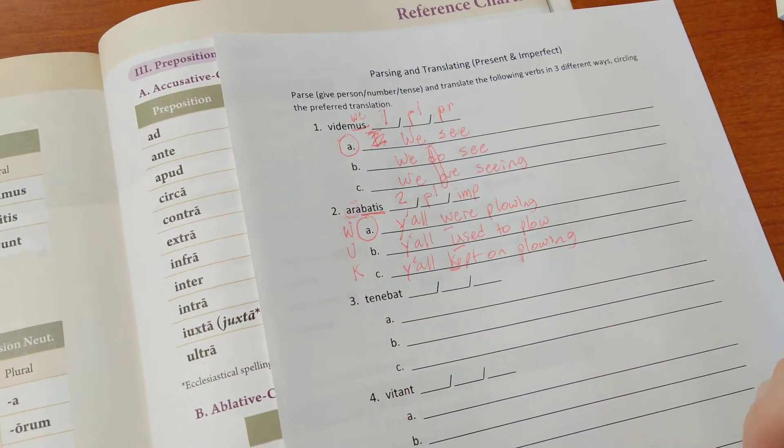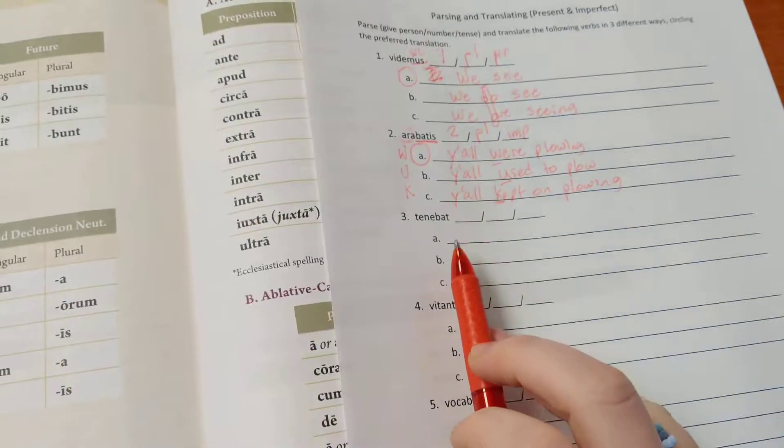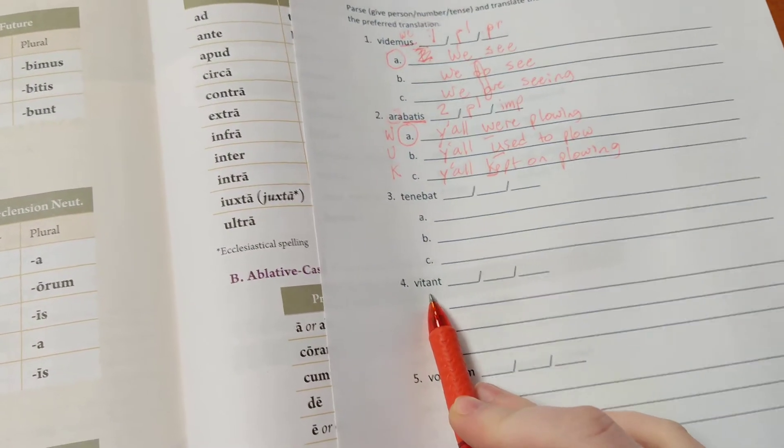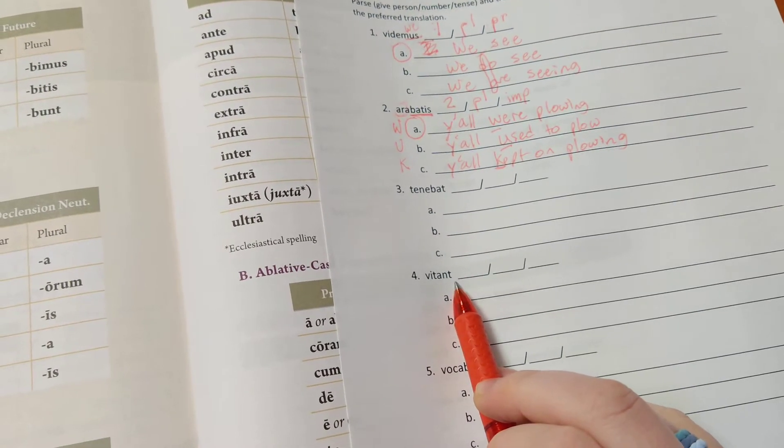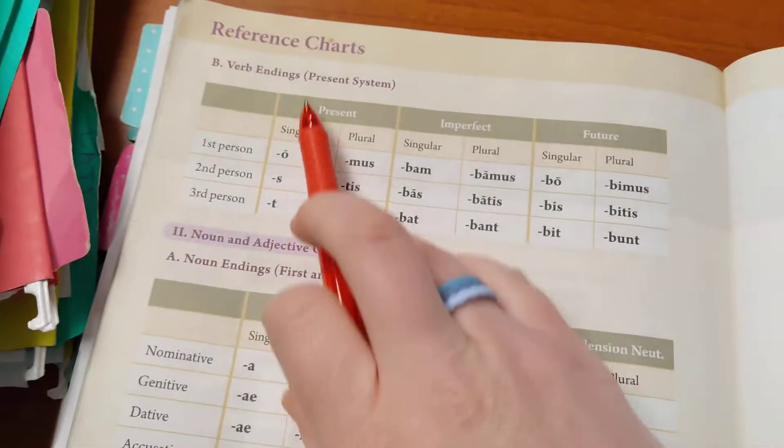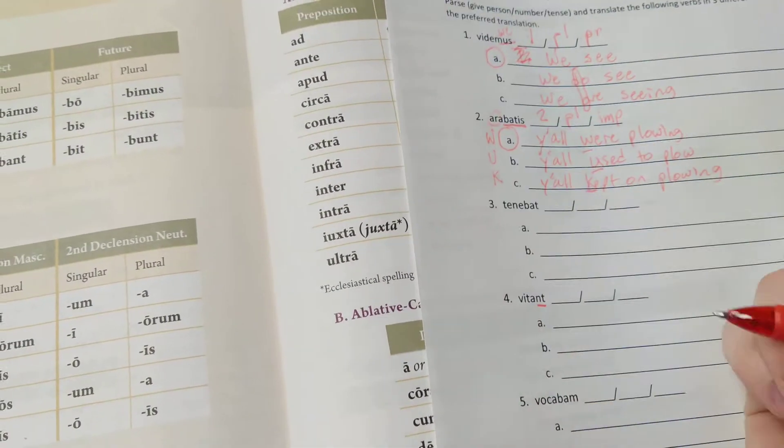Let's do one more of each and then hopefully you can finish the rest on your own. So let's do vitant. What is your ending on vitant? Well, if you look over here, we've got just -nt as a possible ending. So -nt is our ending.